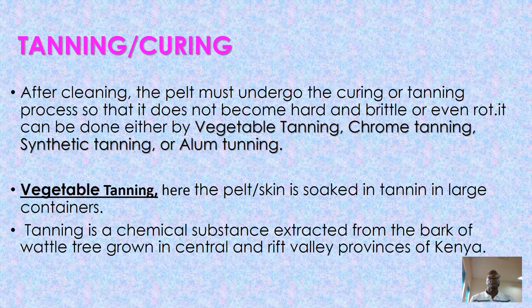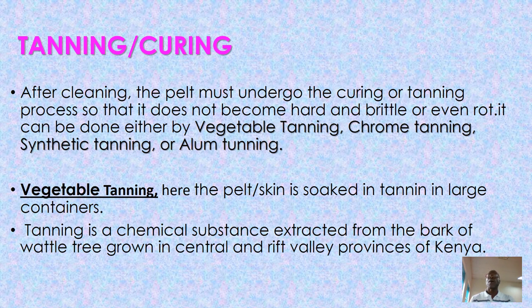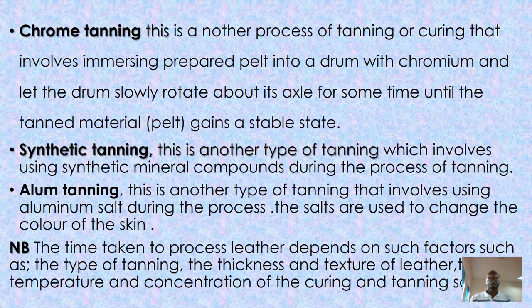If you choose the vegetable tanning process, this involves soaking the item in a tan solution placed in a large container. It uses a chemical substance extracted from the bark of wattle trees found in the central valleys of Kenya. It is called vegetable tanning because it comes from a tree. This helps make the skin soft, usable, and protects it from decaying.